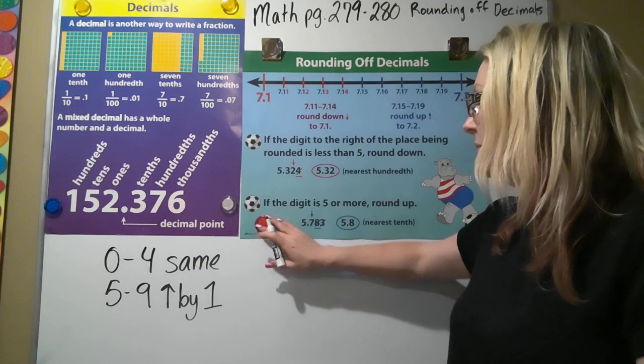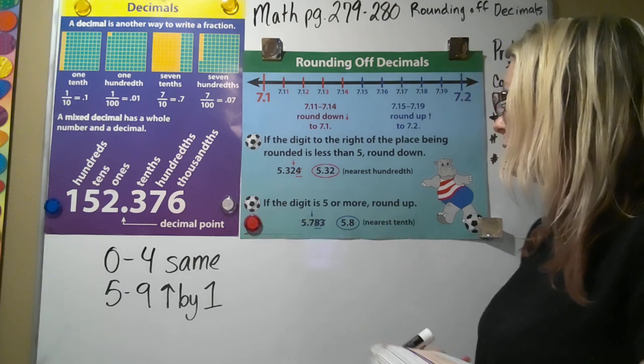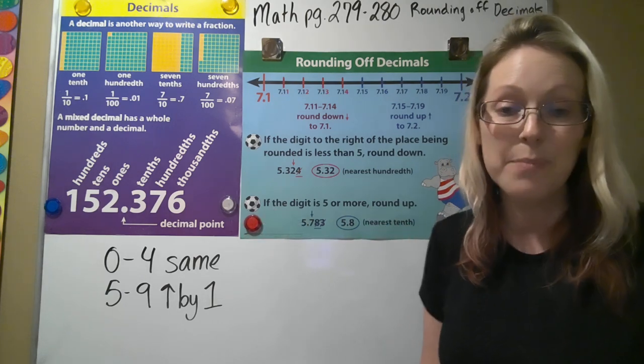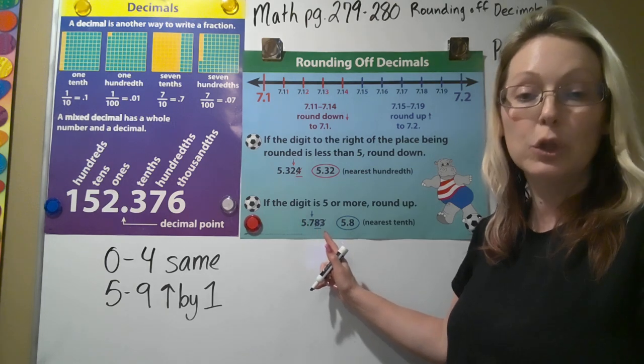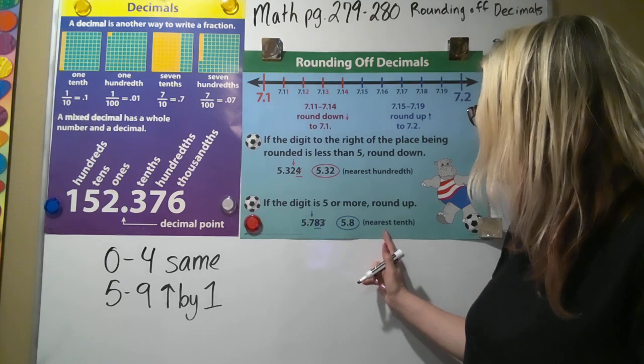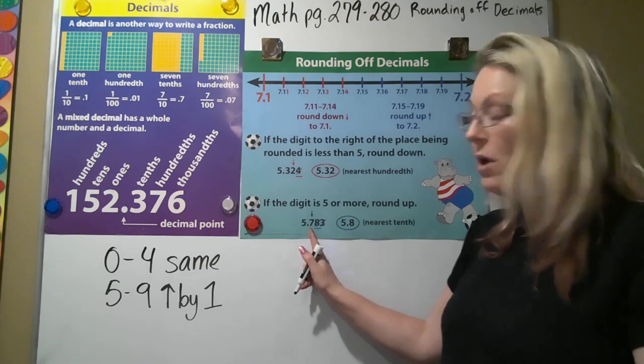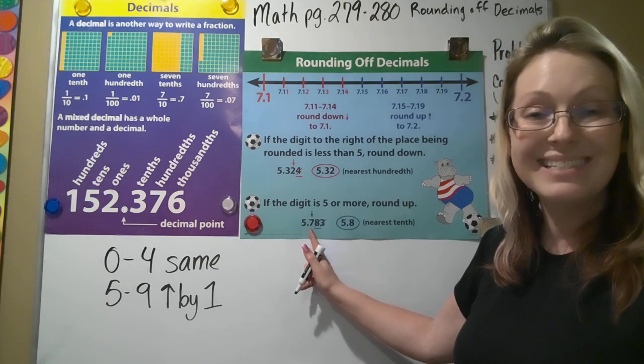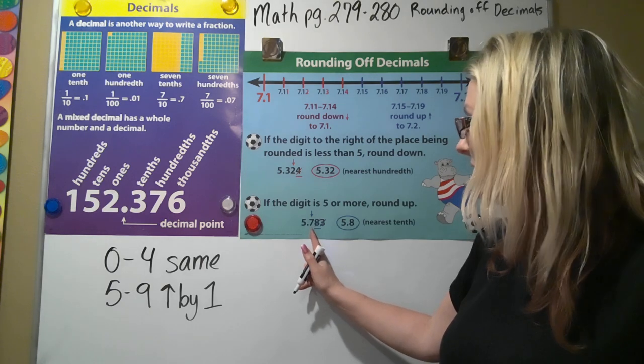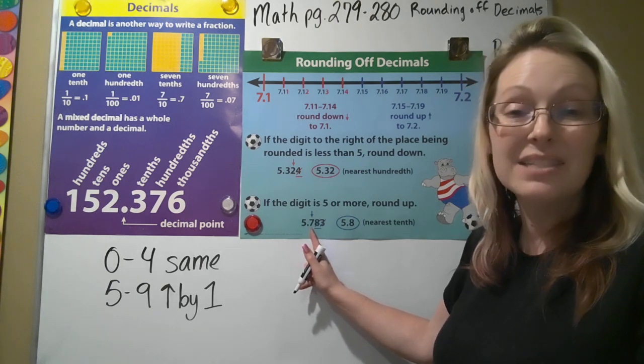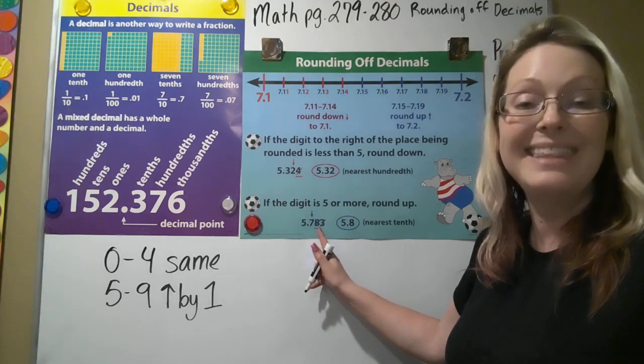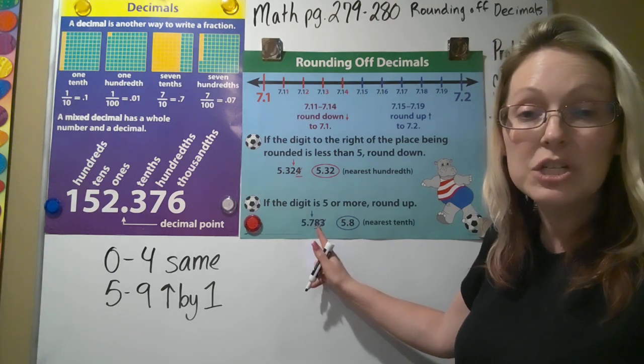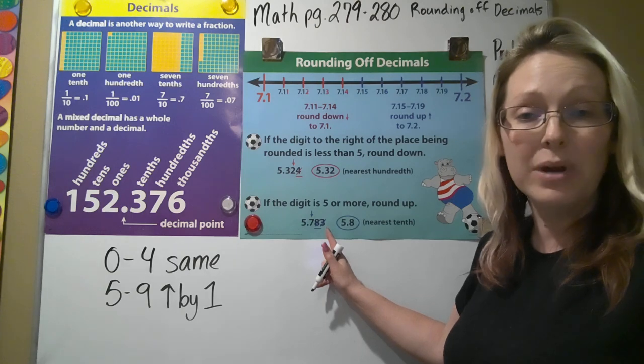Now same thing goes for this next one. If we have 5.783 and it says round to the nearest tenth, I want you to look—that's the first number on this side of the decimal place, the seven. So the seven is the one we're rounding because it's in the tenths place. We take a look at the eight because that's the first digit. Don't even worry about the three. The three is behind the eight; we don't need to worry about that three.